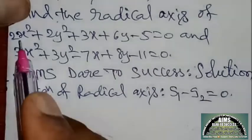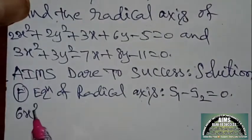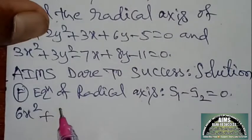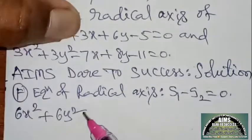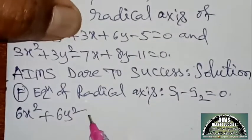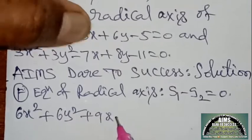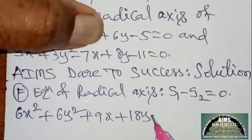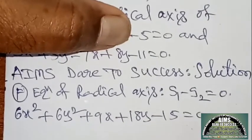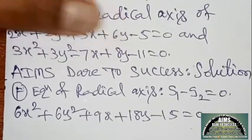We get: 6x² + 6y² + 9x + 18y − 15 = 0 for the first circle multiplied by 3.